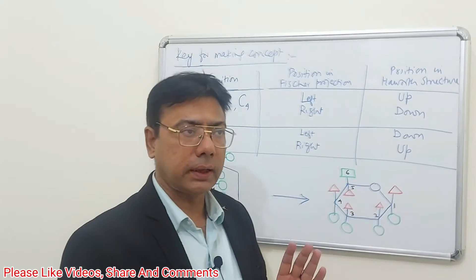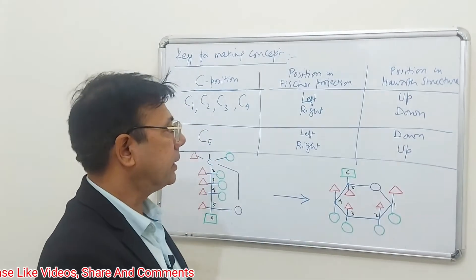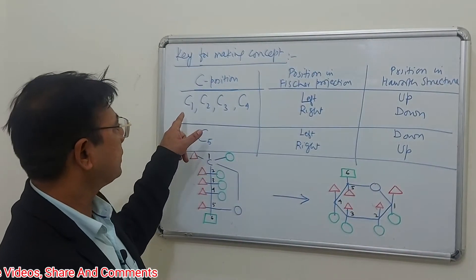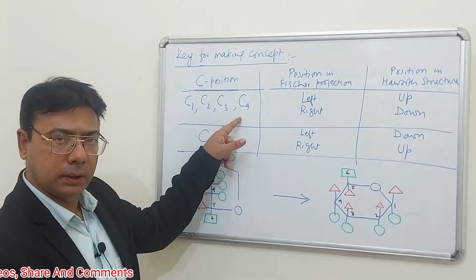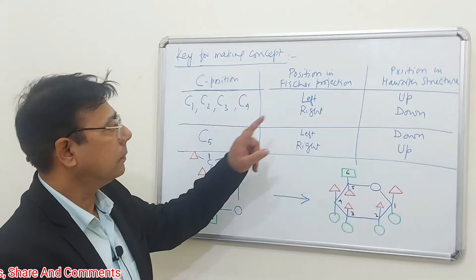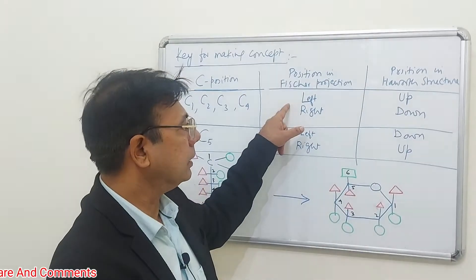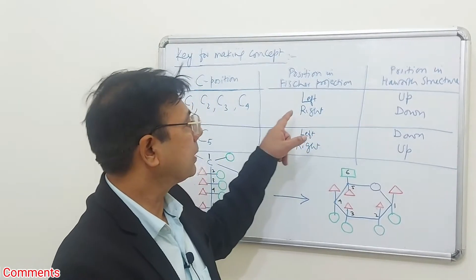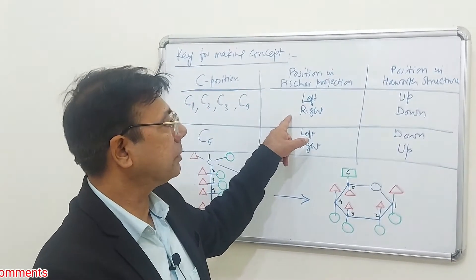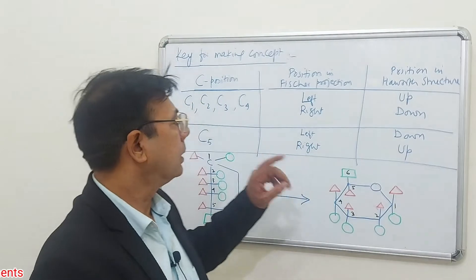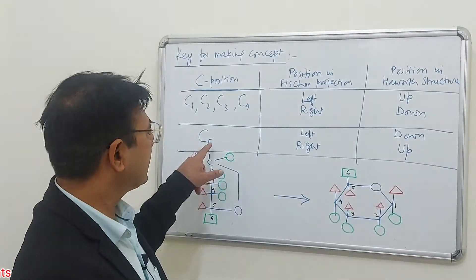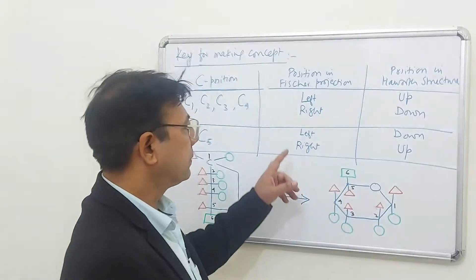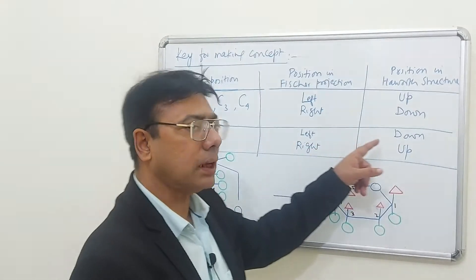Here is a very useful key for interconverting Fischer projections into Haworth structures. For C1, C2, C3, and C4: what is left in the Fischer projection becomes up in the Haworth structure, and what is right in the Fischer projection becomes down in the Haworth structure. For C5, the situation reverses: what is left in the Fischer projection becomes down in Haworth, and vice versa.